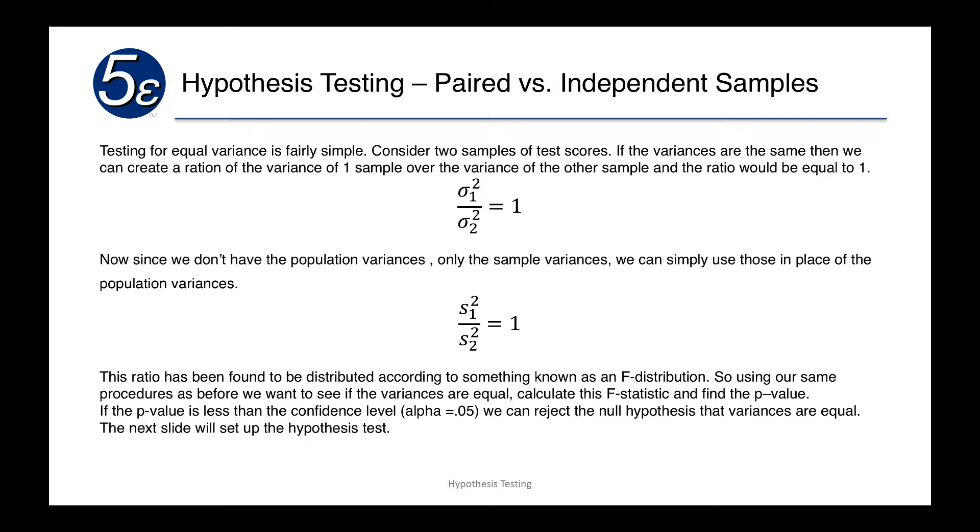Now, statistically, this is shown to be distributed along another type of distribution called an F-distribution. So we're introducing a new distribution. But we're going to use the same procedures as we had in the past. We're going to, in this case, instead of calculating a t-statistic, we're going to calculate an F-statistic.